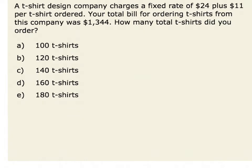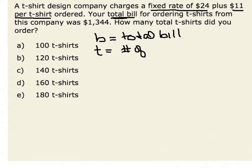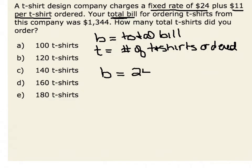We know that our total bill has two components: a fixed rate of $24 and a rate of $11 per t-shirt. Therefore, if we let b equal the total bill and we let t equal the number of t-shirts ordered, we could write our equation. We know that our bill B is equal to our fixed rate of $24, which we get charged no matter if we order zero t-shirts or a thousand t-shirts, plus $11 per t-shirt ordered.